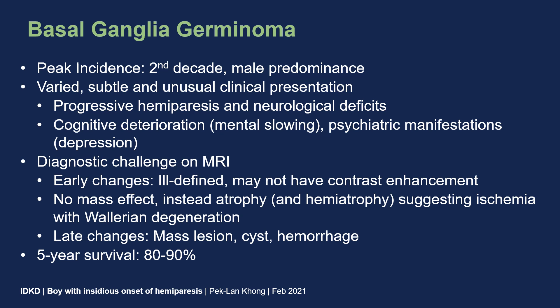The peak incidence of germinomas is in the second decade of life with male predominance. As illustrated by this case, the clinical presentation can be unusual — such as insidious onset of progressive hemiparesis and neurological deficits. Cognitive deterioration and even psychiatric manifestations have been reported. Imaging can be a diagnostic challenge: in early stages it can appear as an ill-defined T2-hyperintense focus without contrast enhancement or mass effect; instead there may be volume loss and hemi-atrophy suggesting ischemia and Wallerian degeneration. Later, it can present as a cystic and potentially hemorrhagic mass. Five-year survival is favorable at 80 to 90 percent, especially if diagnosed early.